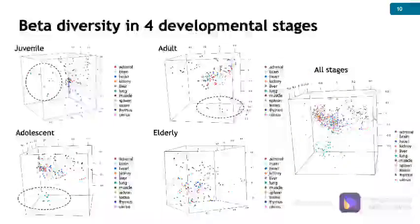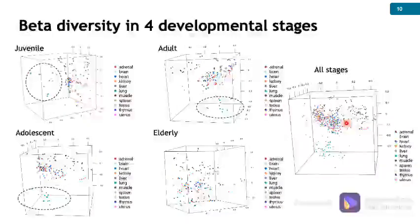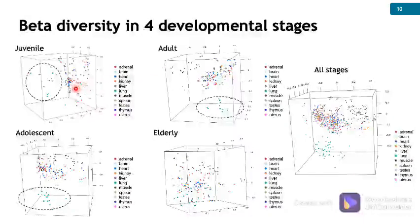Beta diversity assesses how different sample communities vary against each other. From this three-dimensional principal coordinates analysis PCoA plot, we can see that the lung samples showed notable separation from other tissues in the juvenile, adolescent, and adult stages.